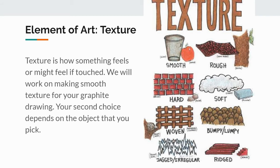The last element of art we'll look at is texture. Texture is how something feels or might feel if touched. We will work on making smooth texture for your graphite drawing, and your second choice depends on the object that you pick.